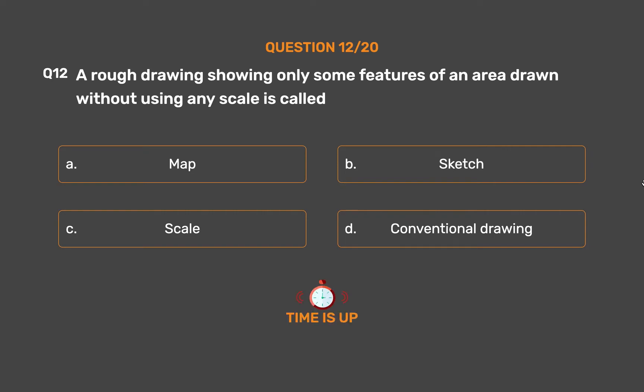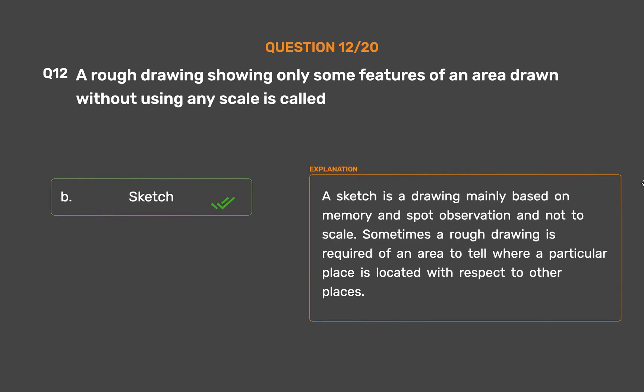The correct answer is Option B: Sketch. A sketch is a drawing mainly based on memory and spot observation and not to scale. Sometimes a rough drawing is required of an area to show where a particular place is located with respect to other places.